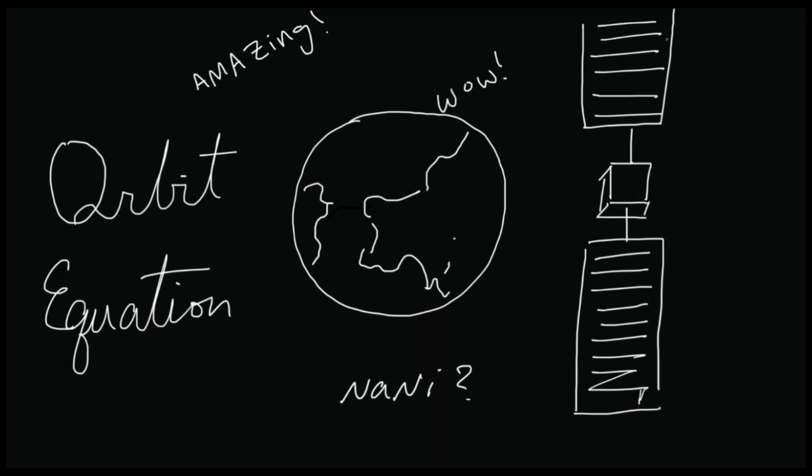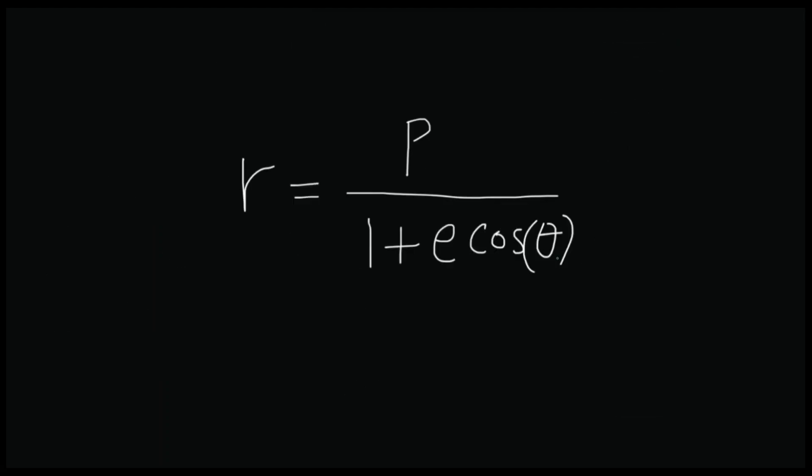Welcome back to another episode. Today we're going to be talking about an orbit equation. I'm not going to sugarcoat anything, and I'm going to literally start with the equation that we are going to learn today. And here it is on the board. R equals P over 1 plus E cosine theta.